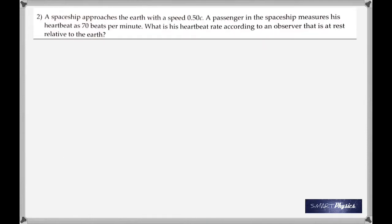Takes us to the second question. It's about a spaceship approaching the earth with a speed 0.5c. A passenger in the spaceship measures his heartbeat at 70 beats per minute. What is his heartbeat rate according to an observer that's at rest, related to the earth?